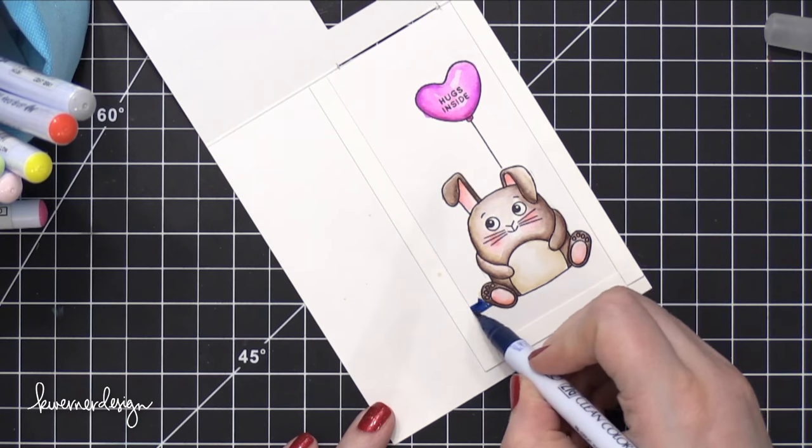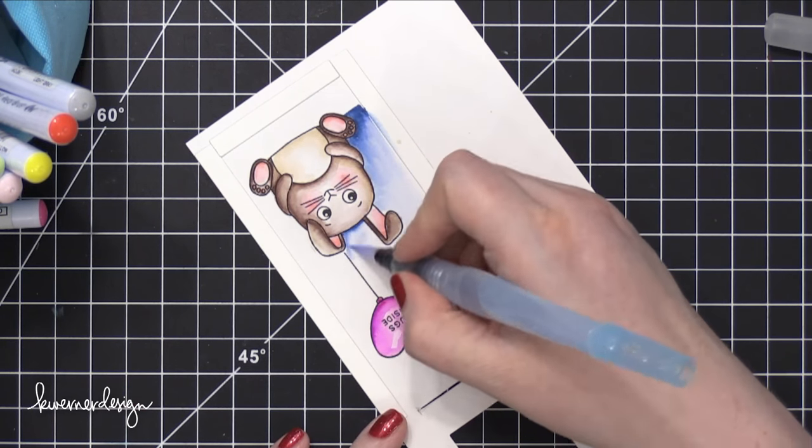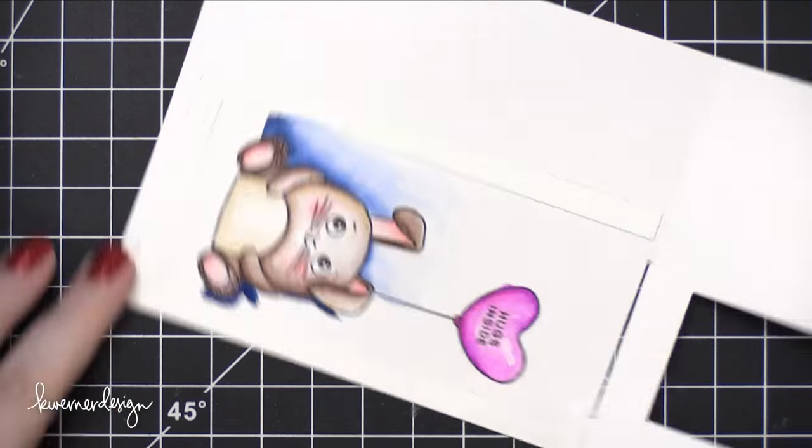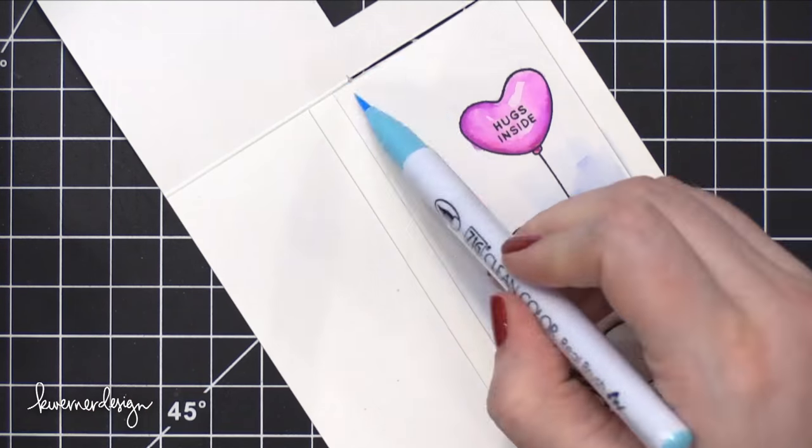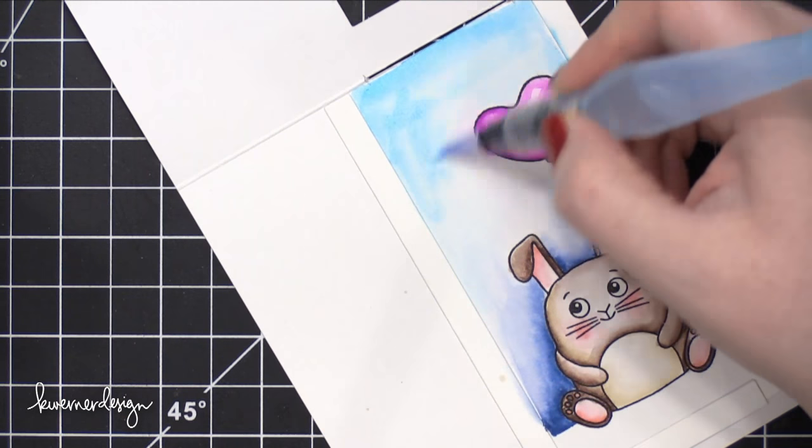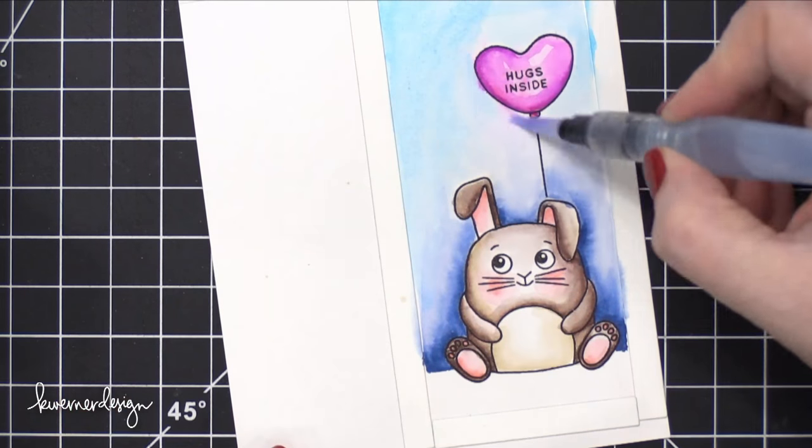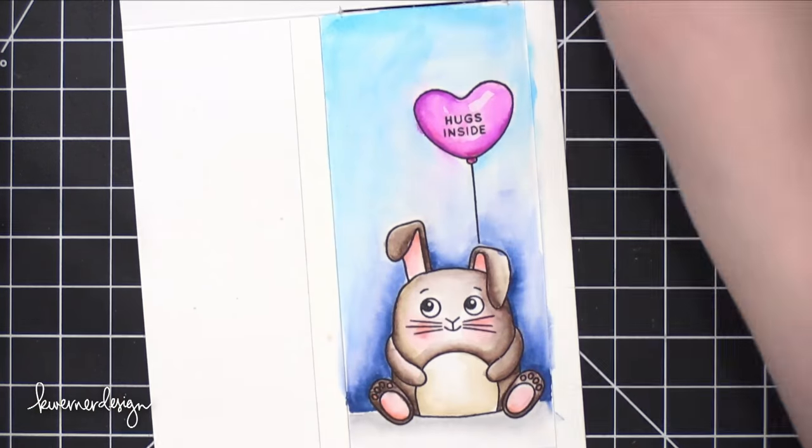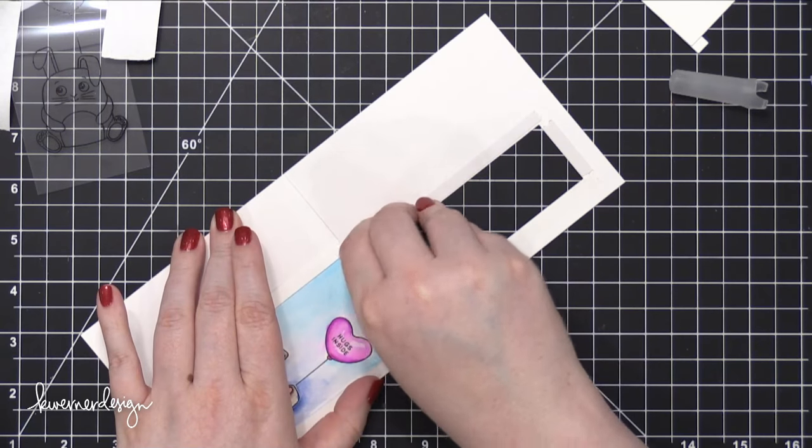So if you have ever had any frustration with even like the Copic markers or watercolor pencils, things like that, different watercolor mediums that don't want to really spread, try them on Bristol paper because that might be the difference that makes you love those mediums. So I'm bringing in a darker blue on the bottom and then a lighter blue at the top, just trying to make sure I have quite a bit of color showing through. Then I'm going to add some gray at the bottom beneath the bunny as a shadow, and this is going to give me a nice full color area.